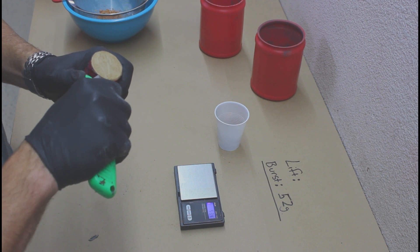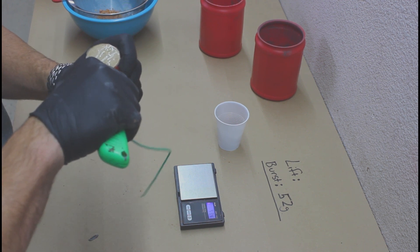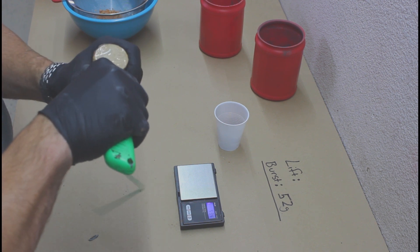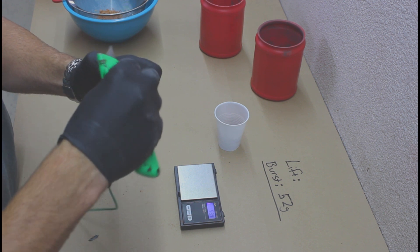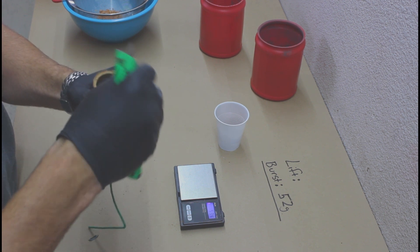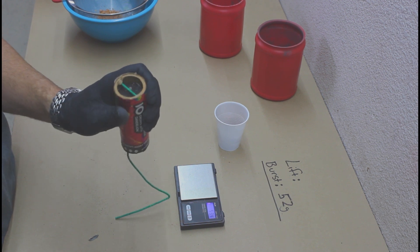So legally, these canisters can only have 60 grams total of composition that includes the lift charge and the burst charge. So we get to the lift charge. Just pull off the bottom. The fuse goes through. That's your lift charge.